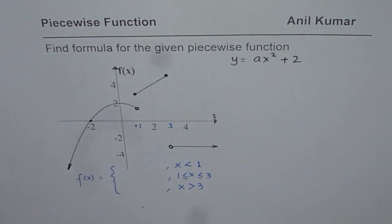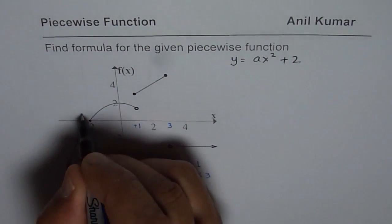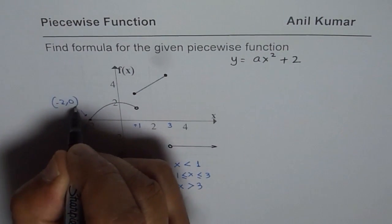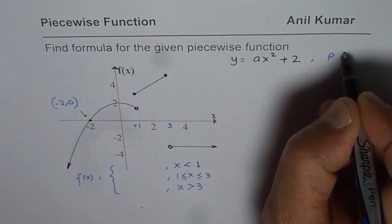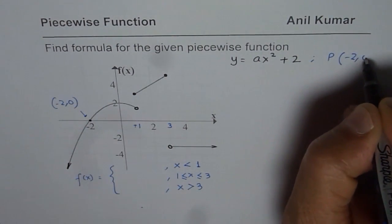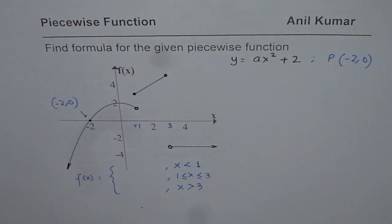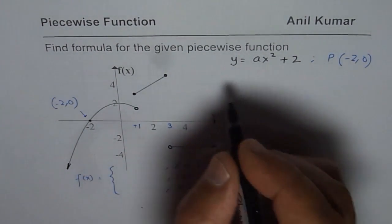Now we will use this point which is minus 2, 0. So we will use the point p, let us say, which is minus 2, 0. That is to say, I will substitute x as minus 2, y as 0.